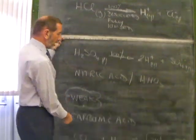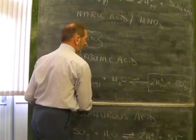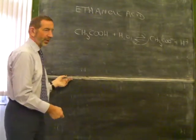So you're expected to know the three strong acids. Hydrochloric, sulfuric, and nitric. And the three that you've not met before. Carbonic, sulfurous, and ethanoic.